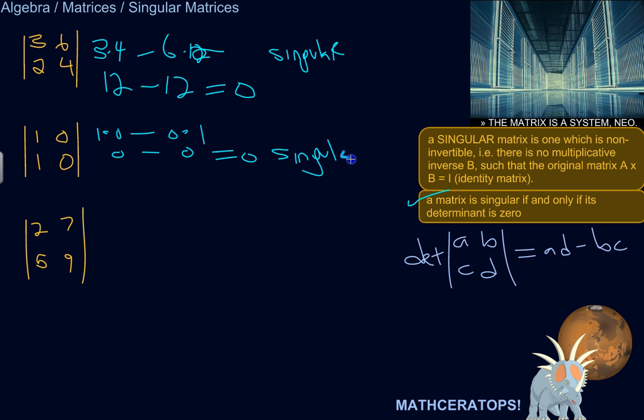Pretty nice with 2x2 matrices, right? And then this one, so the determinant is 2 times 9 is 18 minus 7 times 5, 35. 18 minus 35 is negative 17. So it's not singular, meaning you could find a multiplicative inverse of this matrix.